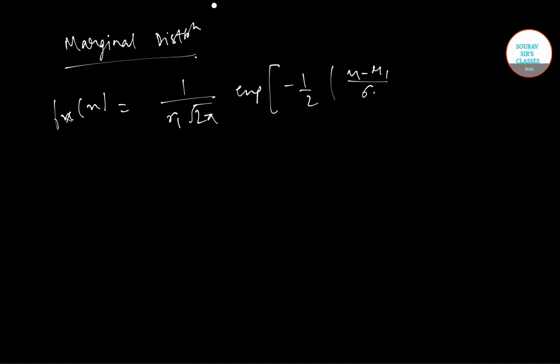The marginal distribution is given as: for X, f_X = 1/(σ_1 √(2π)) exp[-1/2 ((x-μ_1)/σ_1)²], thus X follows normal(μ_1, σ_1²).